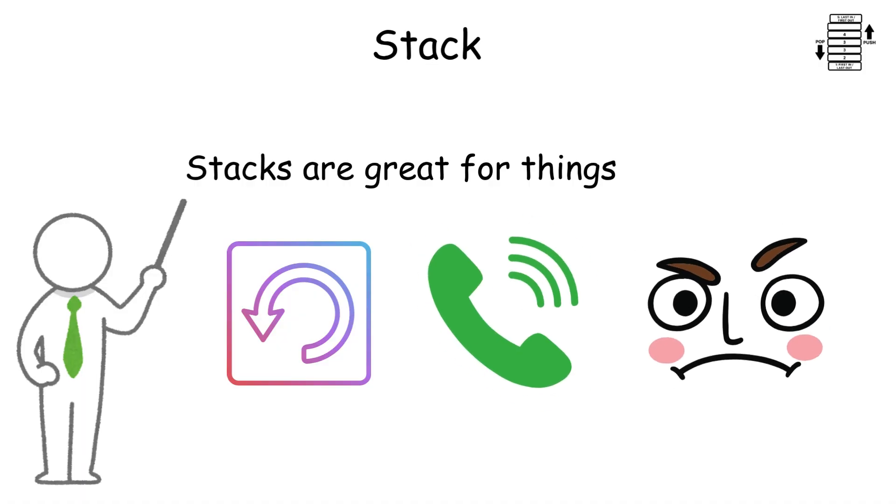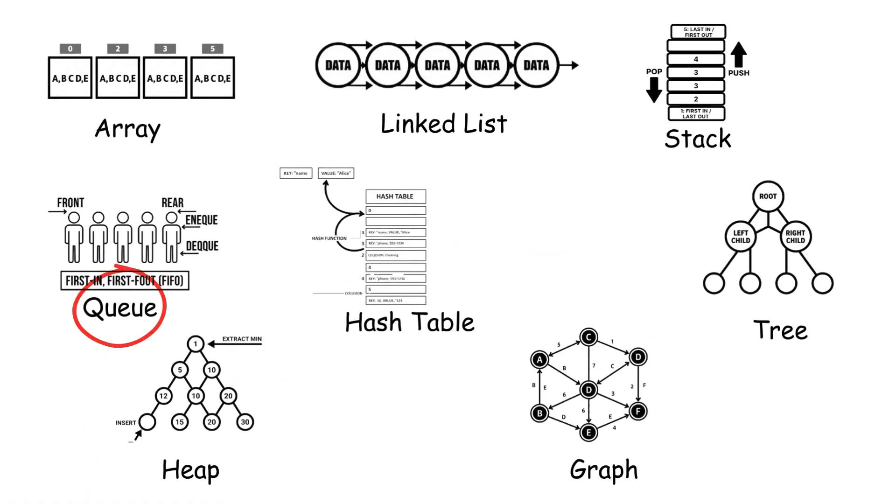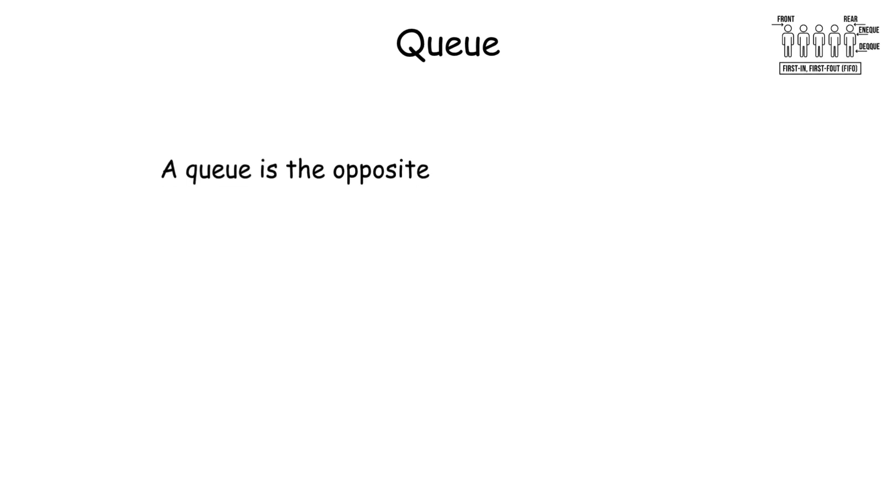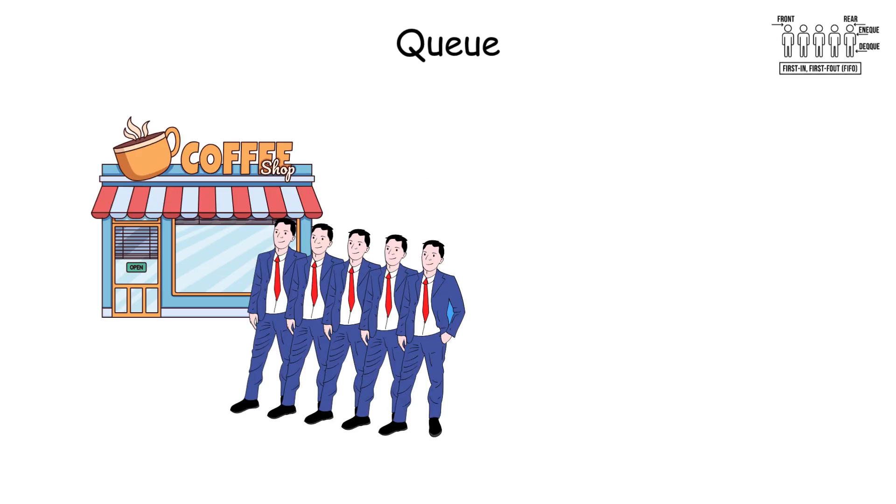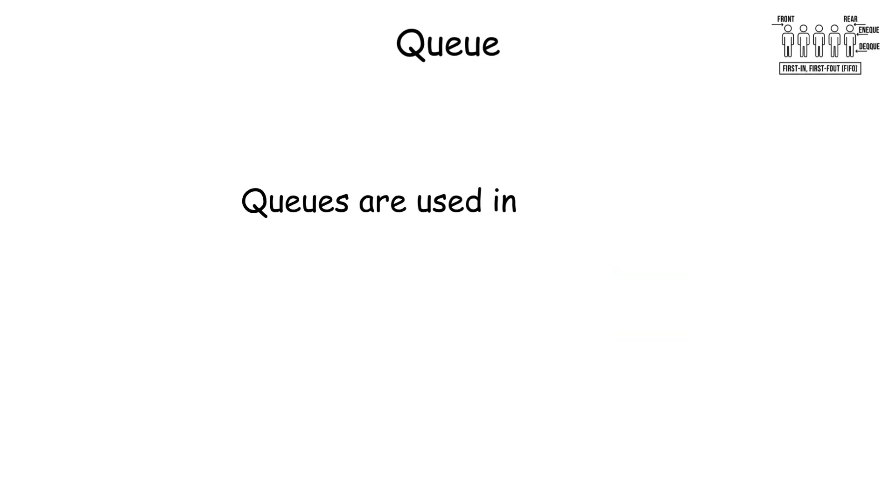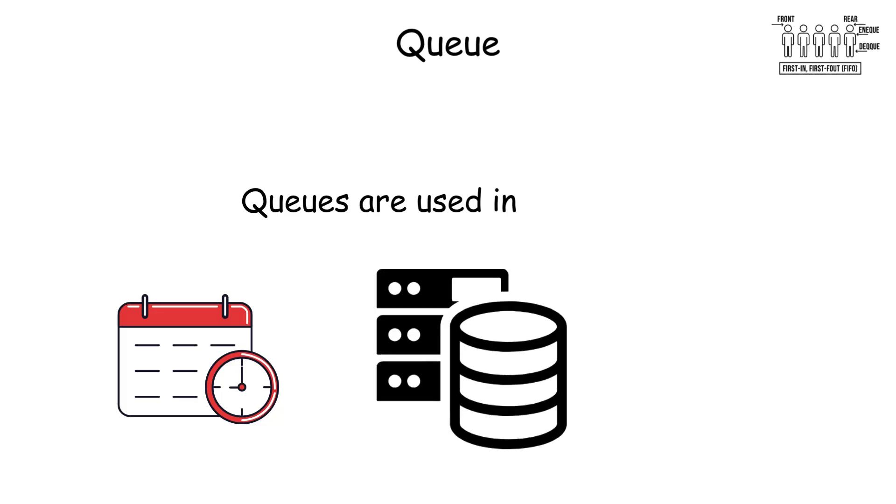Queues: A queue is the opposite—first in, first out. Think of people waiting in line for coffee. The first person to get in line is the first to be served. Queues are used in scheduling, buffering, and anywhere you process items in order.